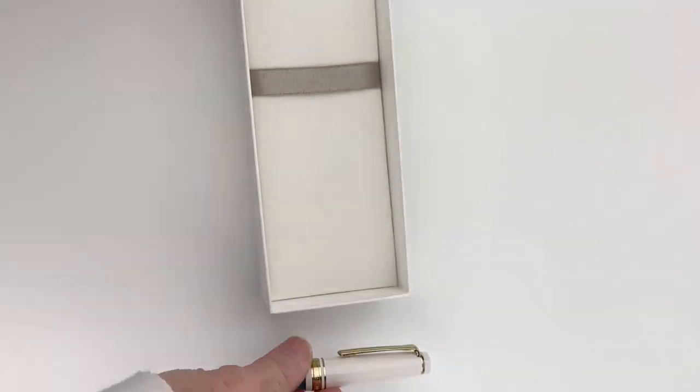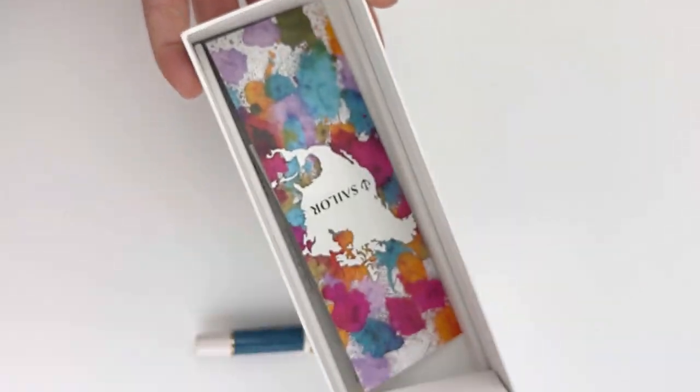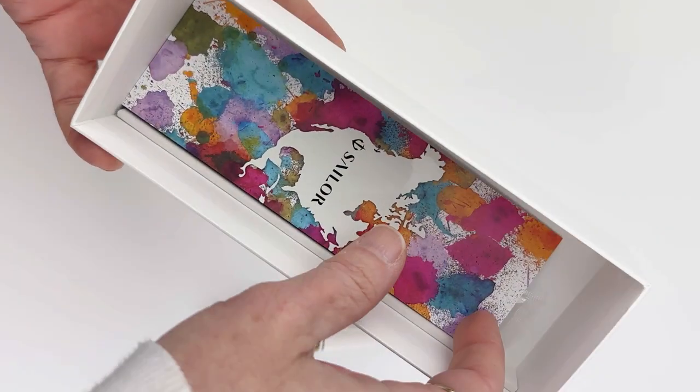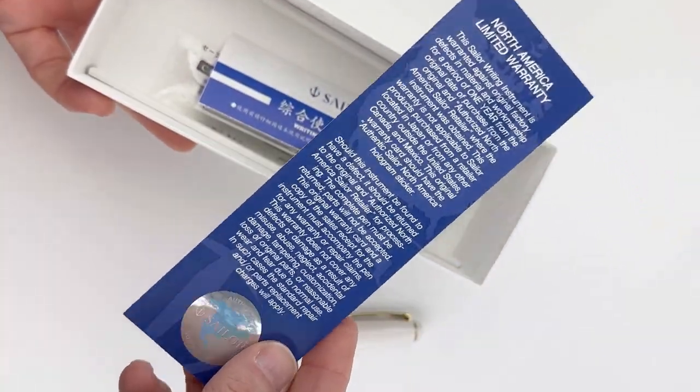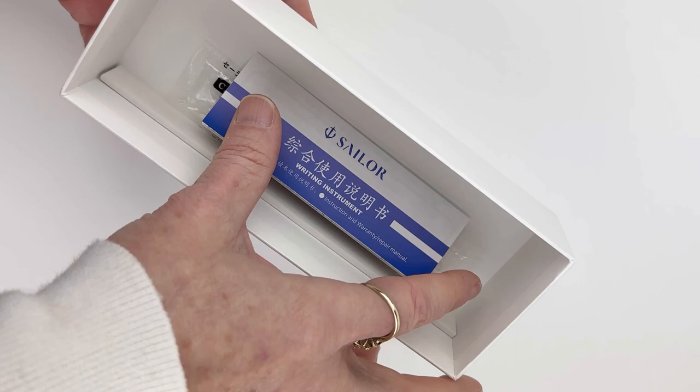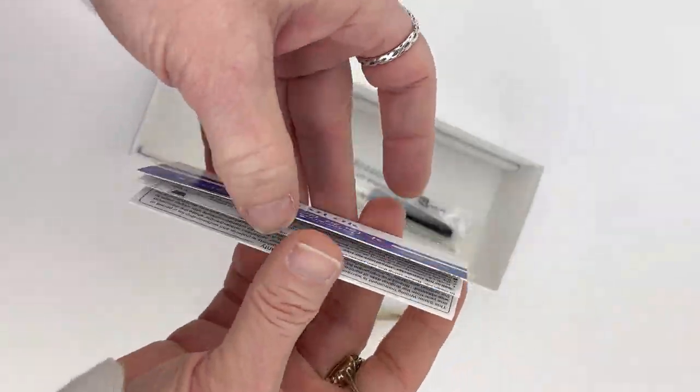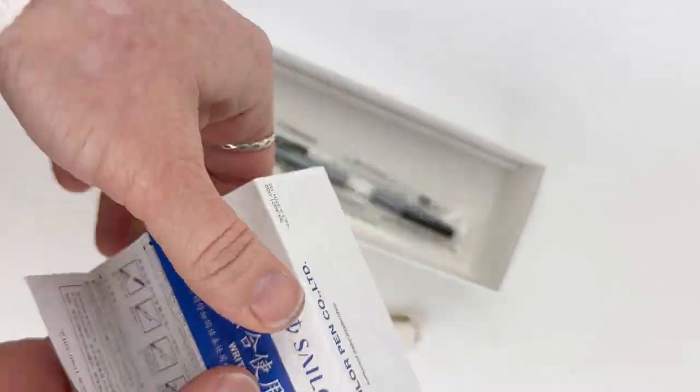First we'll look at this one, referred to as Bleu Co. I'm not sure I'm pronouncing that right. Under the false bottom you have information from Sailor about the warranty, and information about how to take care of your pen, maintenance suggestions, and how to use the fountain pen.